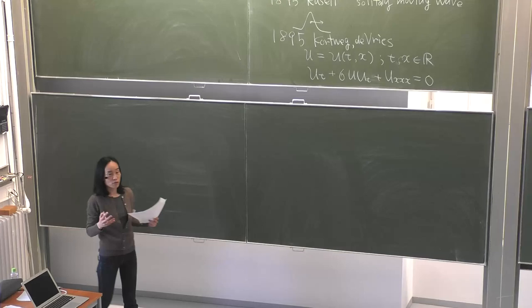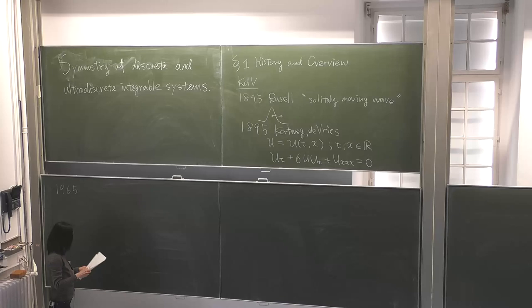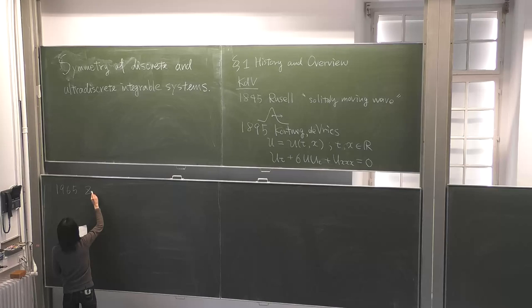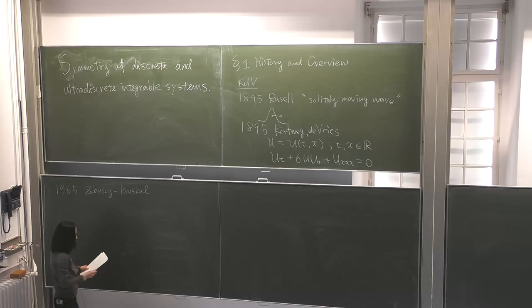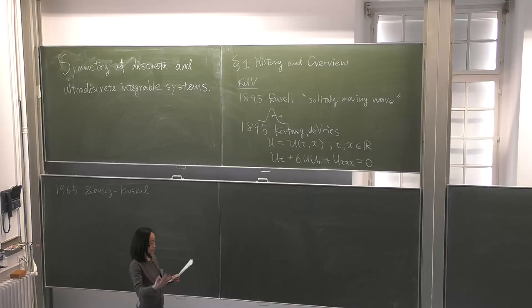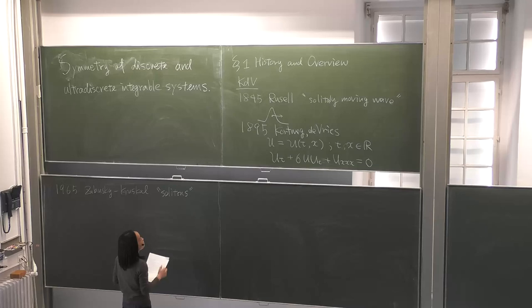In that age there was no computer, so it was difficult to analyze this partial differential equation. But in 1965, the machinery of calculation was developed and Zabusky and Kruskal studied many detailed properties of this equation. The symmetry of solitons was unveiled gradually, and they called that solitary wave a 'soliton' — named by analogy with particle-like things such as photons or electrons.